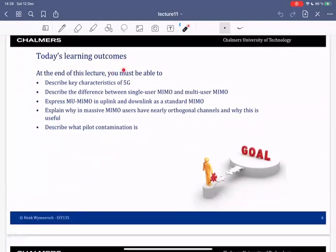Today's learning outcomes: you should be able to describe the characteristics of 5G, the difference between single-user MIMO and multi-user MIMO, express multi-user MIMO in both uplink and downlink as a standard MIMO system, explain the benefit of massive MIMO in terms of having near-orthogonal channels, and describe the meaning of pilot contamination.